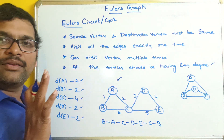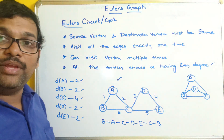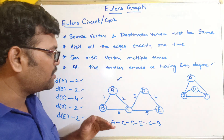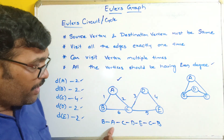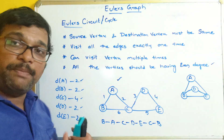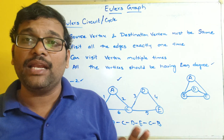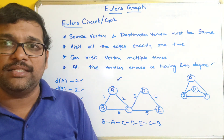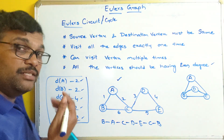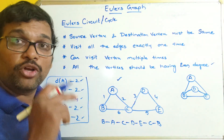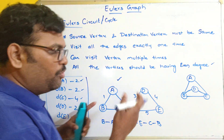So simply, one condition we can check: if the degree for all the vertices are even, we can say we are able to find an Euler's circuit. We can also find an Euler's path because the condition for Euler's path is at most two vertices should be of odd degree. Here there are no odd degree vertices at all, which means the condition also satisfies, so we can also have the Euler's path.